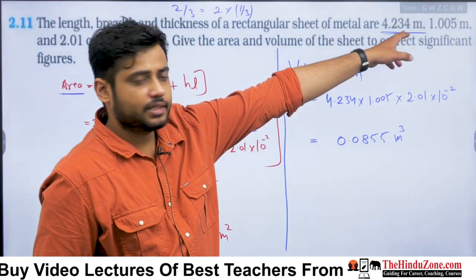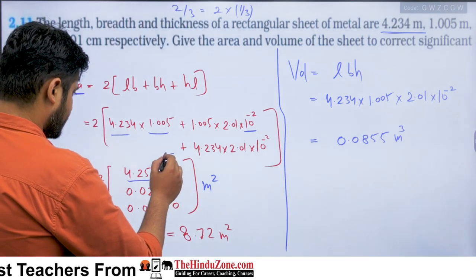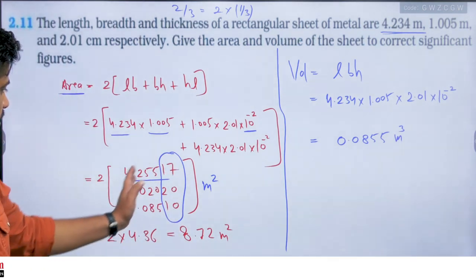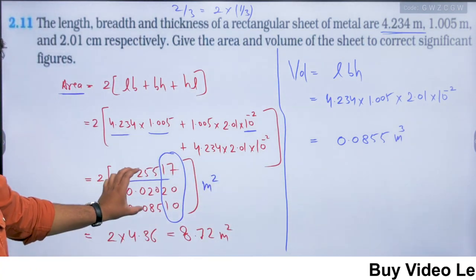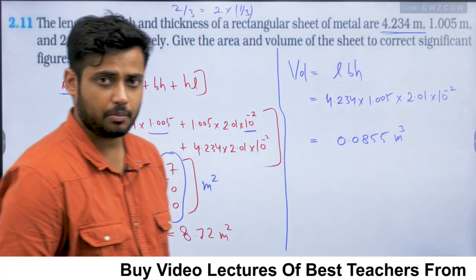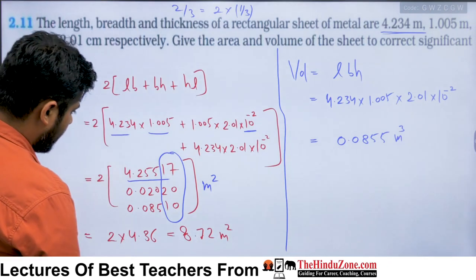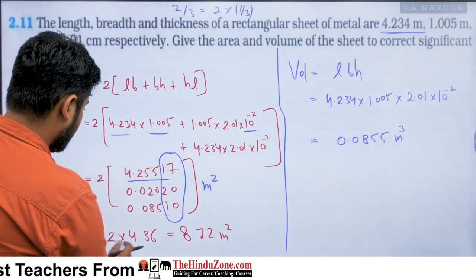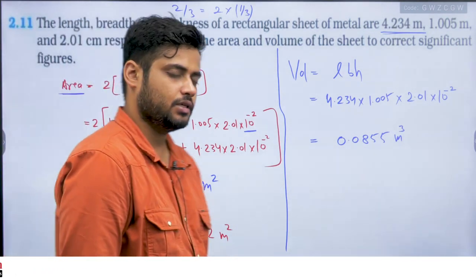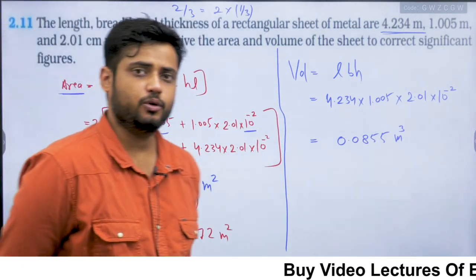We have 4 significant figures here, so I will retain up to that point and ignore the rest beyond the decimal. Adding the relevant decimal-point terms together, the result comes to approximately 4.360. The final answer will be 8.72 m².